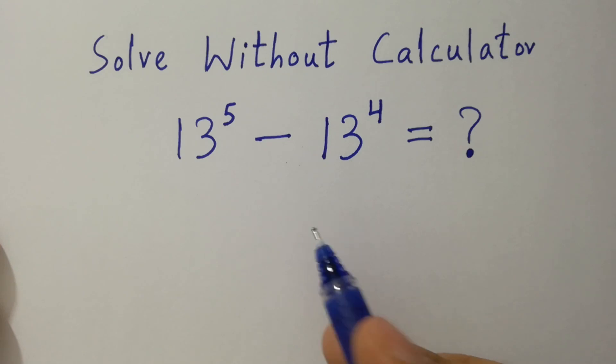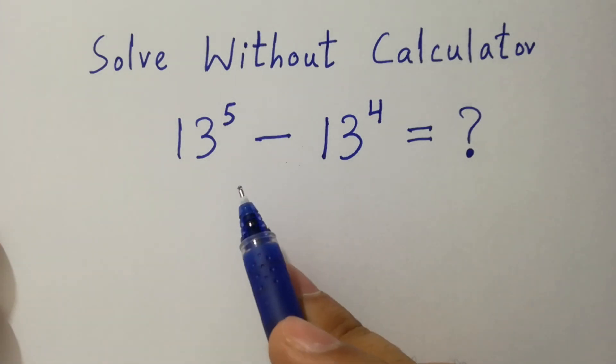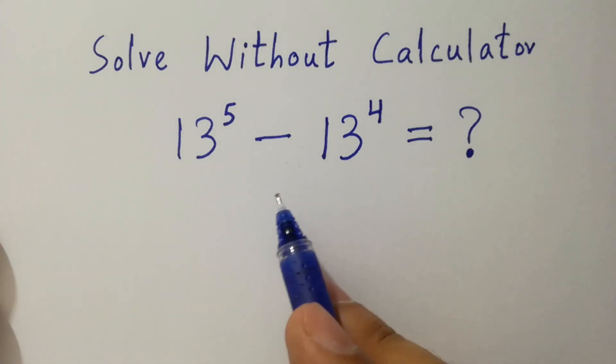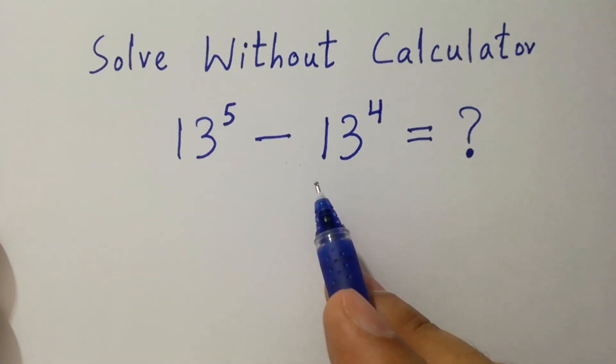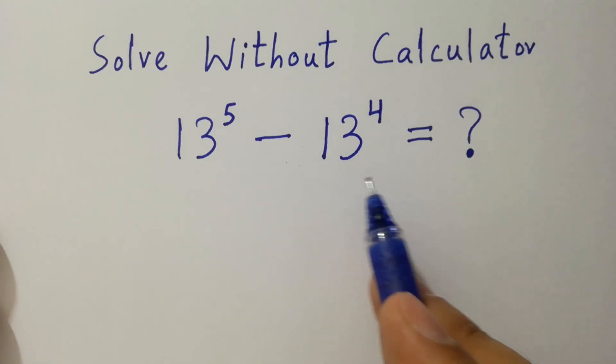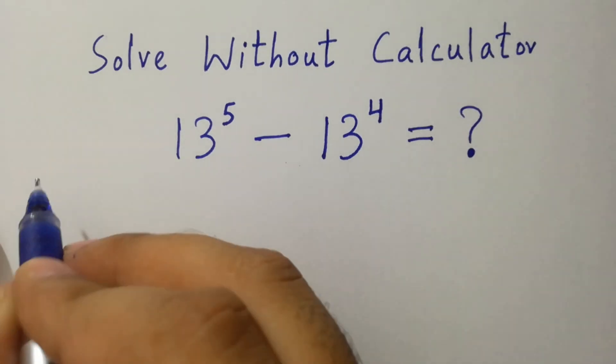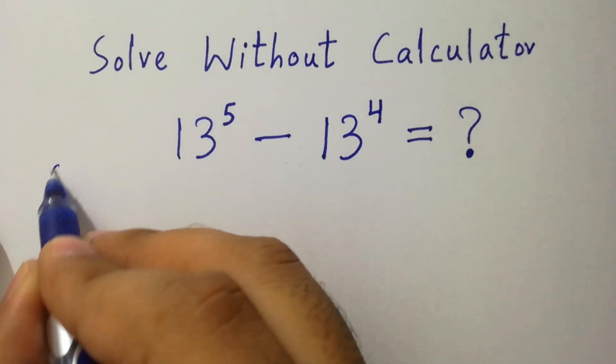Hello friends. 13 to the power 5 minus 13 to the power 4 equals what? Let's have a solution.